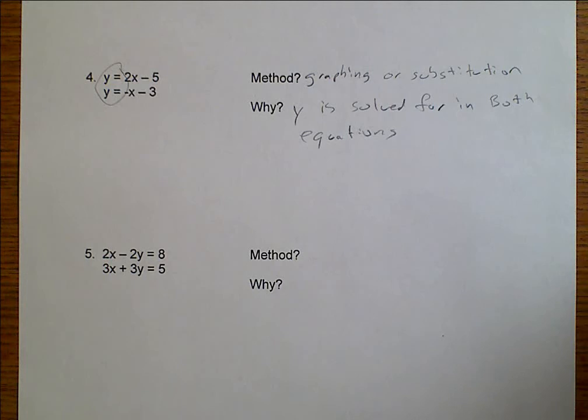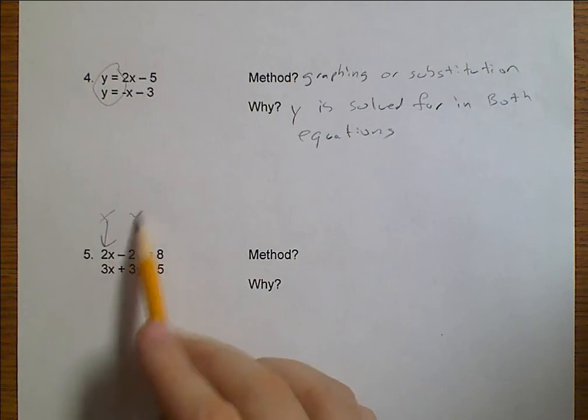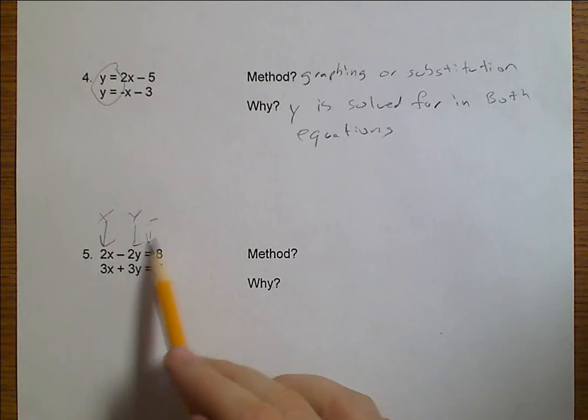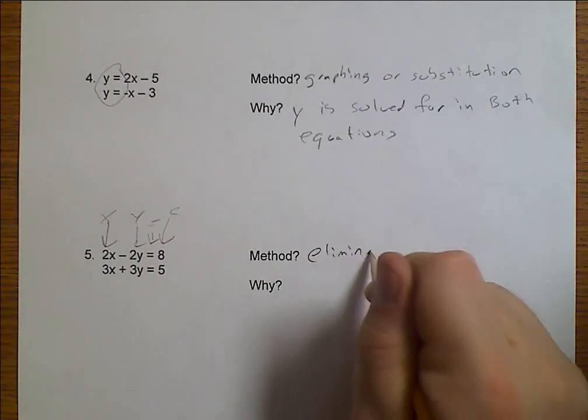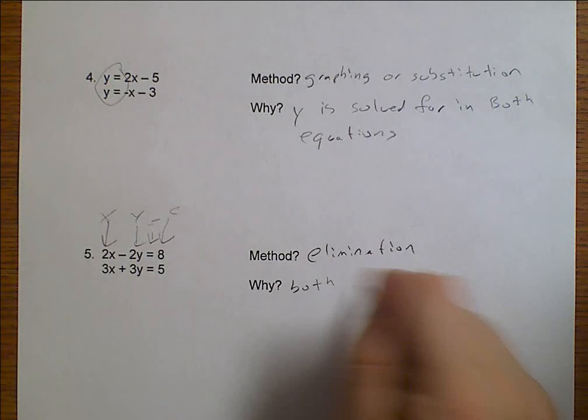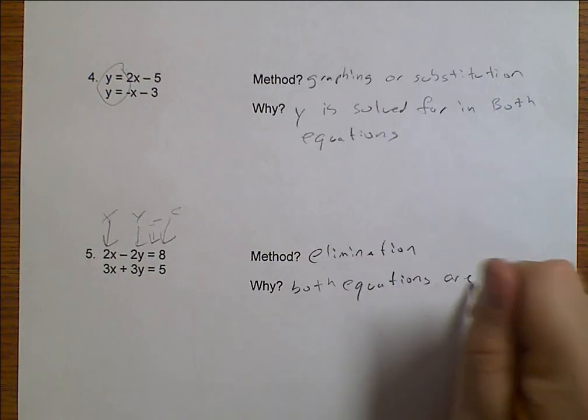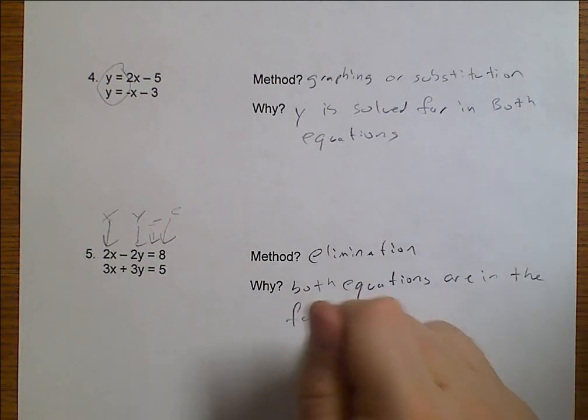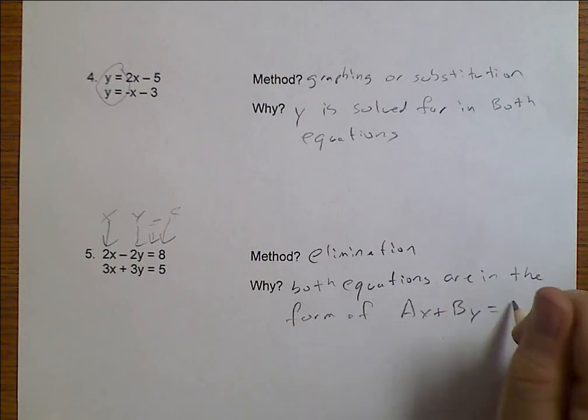And now, we look at number 5. Neither variable is solved for, but they're already listed as X then Y equals some number. So, this method would be elimination. And the reasoning would be that both equations are in the form of AX plus BY equals C.